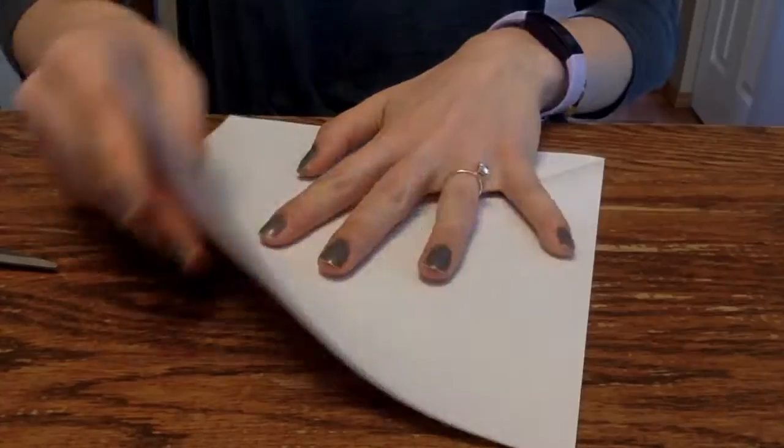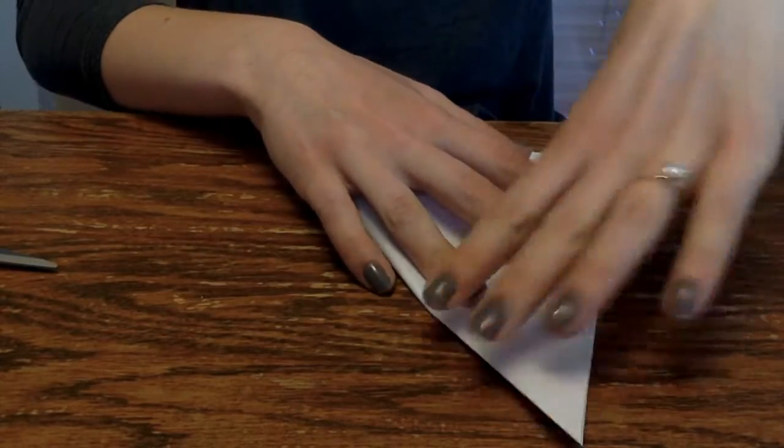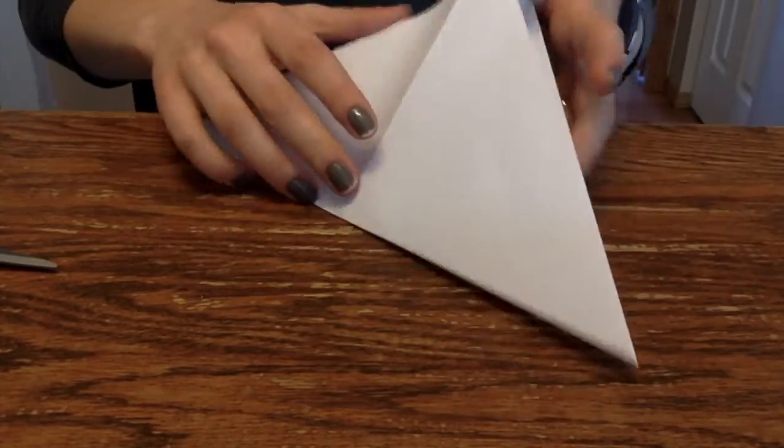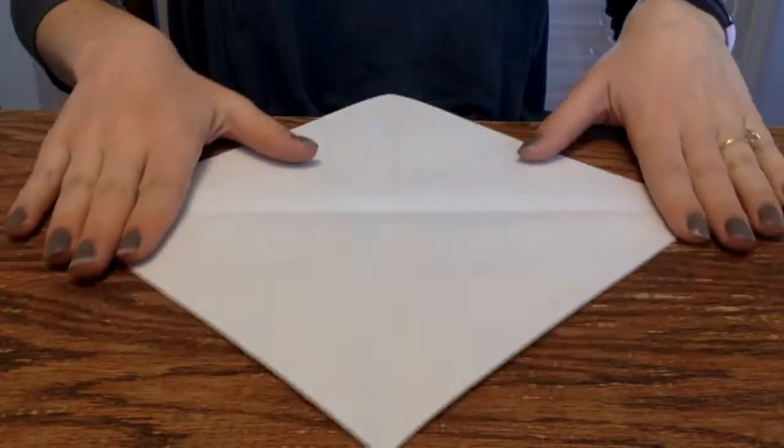Fold the other top corner over to make a triangle again on the other side. Unfold this triangle too so you have an X in the middle of your square.